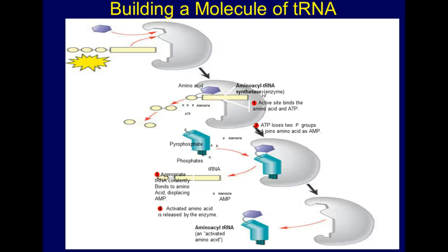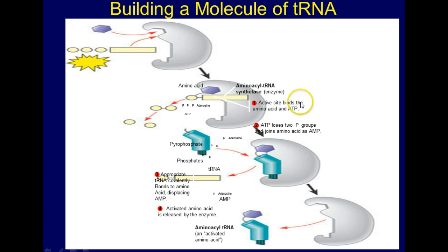There are four steps to this binding process to get in your notes. First, the active site binds the amino acid and ATP. When we do our enzyme section you'll understand more about what active site means, but for now it's just where the enzyme binds. ATP is an energy storage molecule, and it's the energy required to bind these two together.